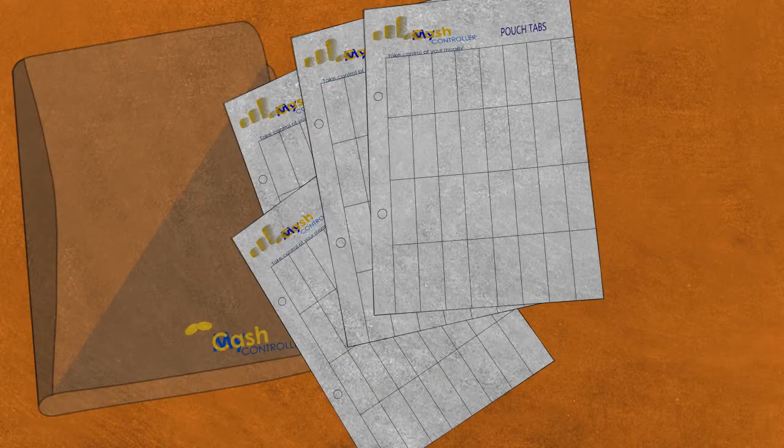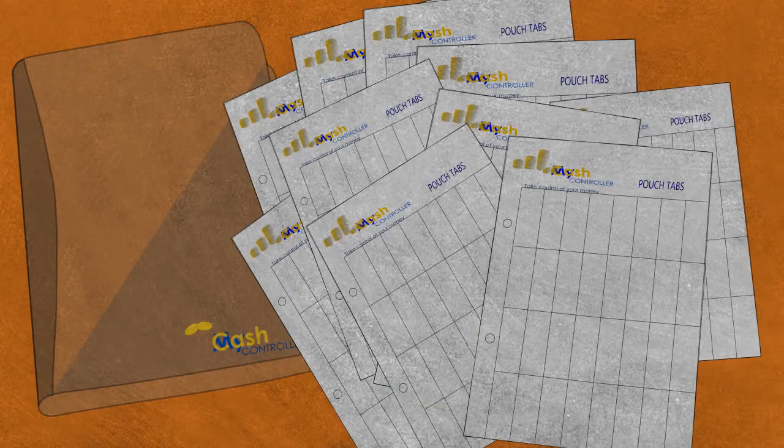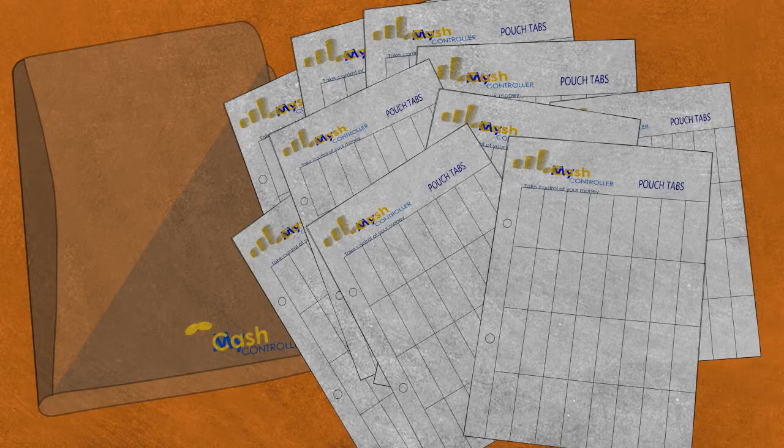My Cash Controller comes with a folder and 10 pouches and tabs for you to allocate your money for your various expenses.